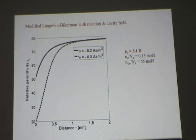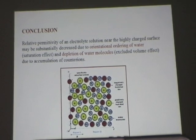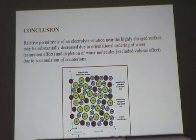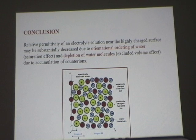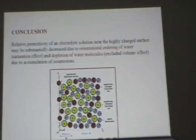The permittivity is reduced even more because of the so-called depletion effect: due to accumulation of counter-ions near the charged surface, the water molecules are depleted, causing an additional decrease in permittivity. This second effect is even stronger than the first one. The orientation ordering causes permittivity decrease because you are in the saturation regime, but the second contribution to the decrease is simply a consequence of the depletion of water molecules due to finite — also called excluded — volume effects.